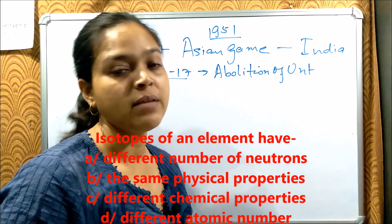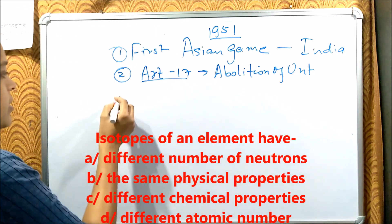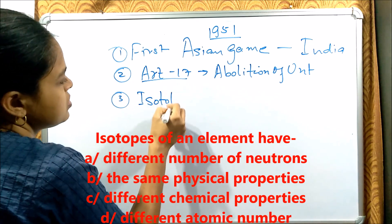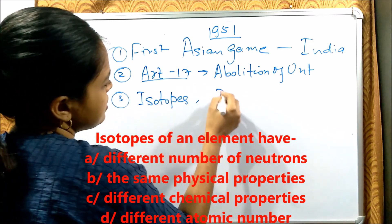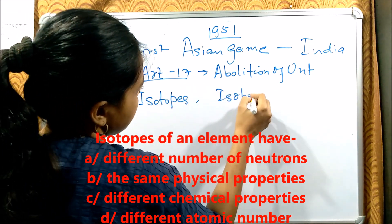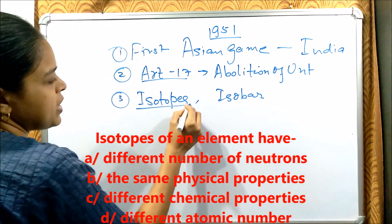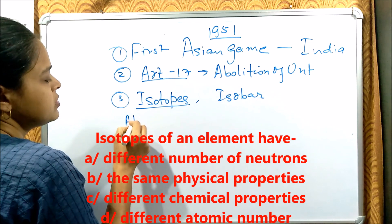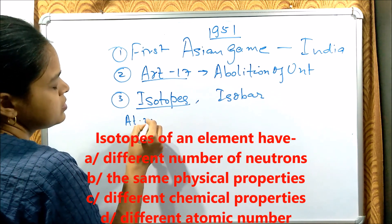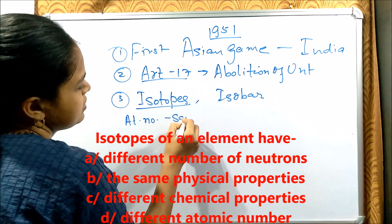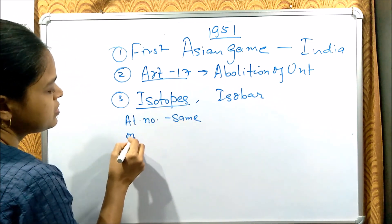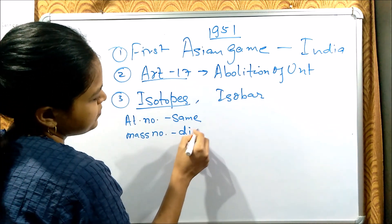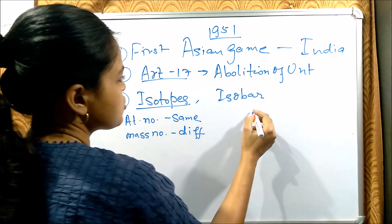Next question: Isotopes of an element have — what? Let's review. Isotopes and isobars are concepts you have studied before. Isotopes have the same atomic number but different mass numbers.